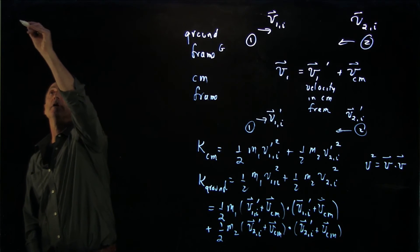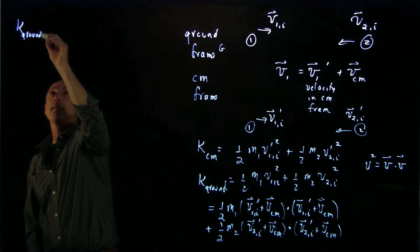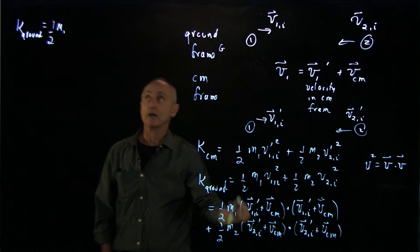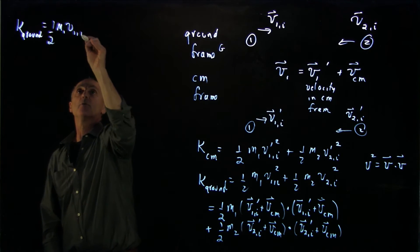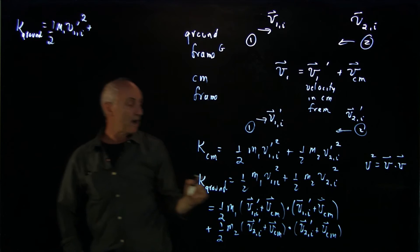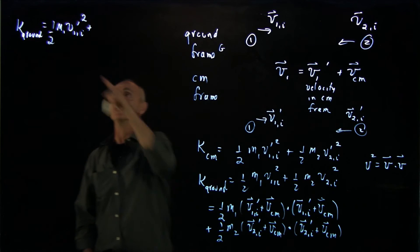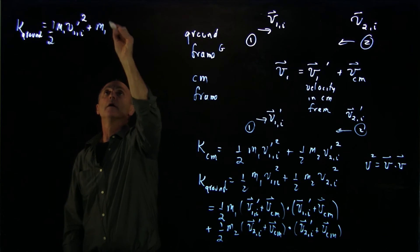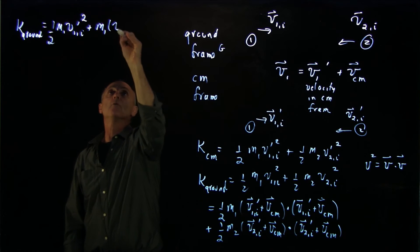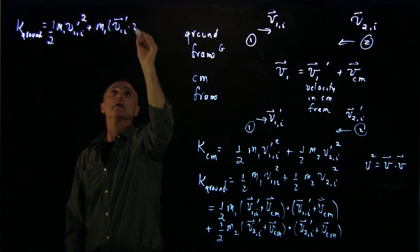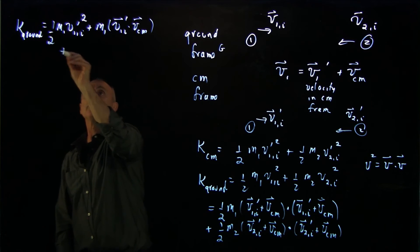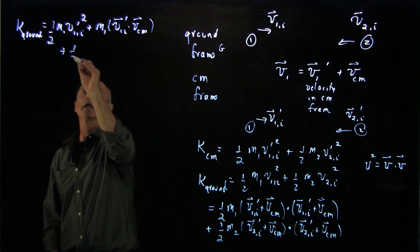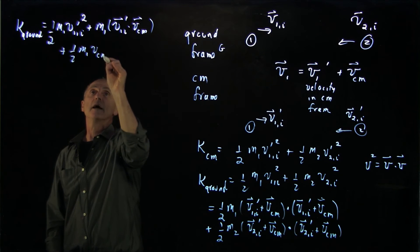So the kinetic energy in the ground frame is 1 half m1, we'll take v1i prime dotted with itself, that's v1i prime squared. We have the cross term, which is a factor of two, which will cancel this. So the cross term is m1, that canceled the factor of two, v1i prime dot vcm plus the vcm with itself. So that's 1 half m1 vcm squared.